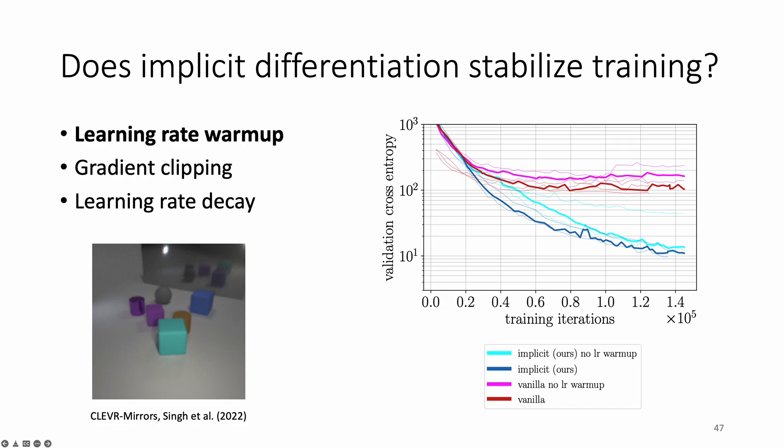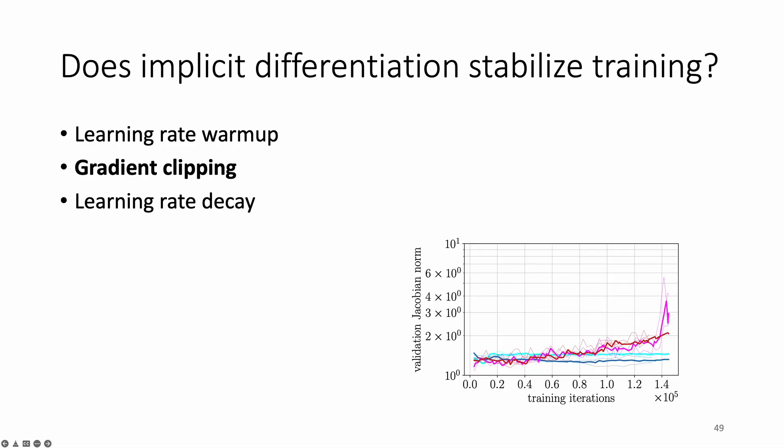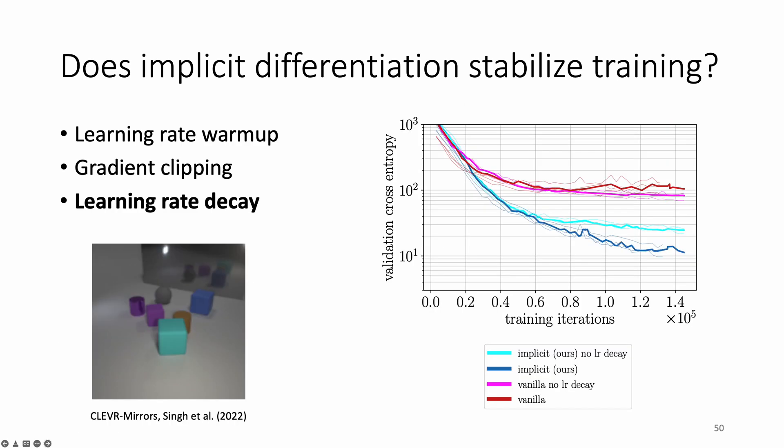If we remove learning rate warmup, both implicit and vanilla versions have higher validation loss, but the learning curves for the implicit version achieve better loss and converge closer together. If we remove gradient clipping, the validation curve for the vanilla version eventually overfits, whereas the validation curve for the implicit version learns faster and does not overfit. In fact, without gradient clipping, the Jacobian norm for the vanilla version begins to explode as training progresses, and this is reflected in the large gradient magnitudes of the slots layer norm in the vanilla version compared to those in the implicit version. Lastly, if we remove learning rate decay, the implicit version still exhibits more efficient learning than the vanilla version.